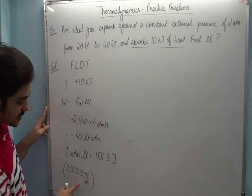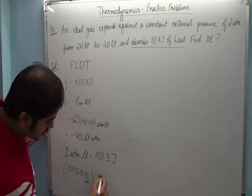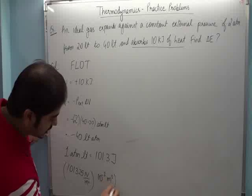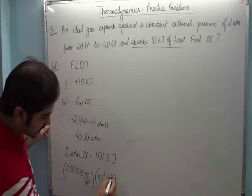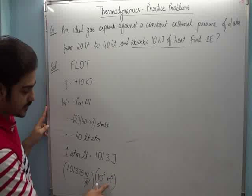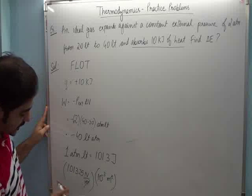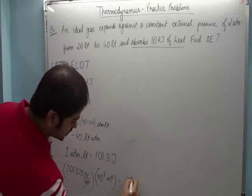You need to remember that one atmosphere has this value, and one liter is 10 to the power minus 3 meter cubed. So effectively, meter squared and two meters cancel, leaving one meter. Multiplying by 10 to the power minus 3 gives you 101.3.